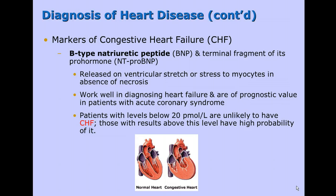For congestive heart failure, a B-type natriuretic peptide (BNP) is released on ventricular stretch or stress on myocytes in the absence of necrosis. For example, if you have high blood pressure over time or other cardiovascular issues, the heart starts to get larger, and as it gets larger those myocytes start to stretch — when they stretch, they release BNP. So if someone has a lot of BNP floating in their bloodstream, it could mean they have congestive heart failure, especially at levels above 20 picomoles per liter.